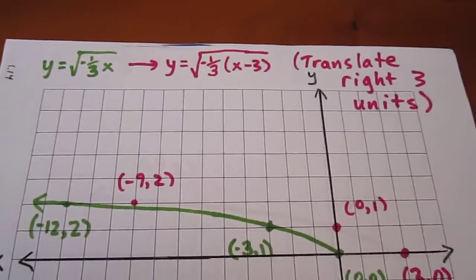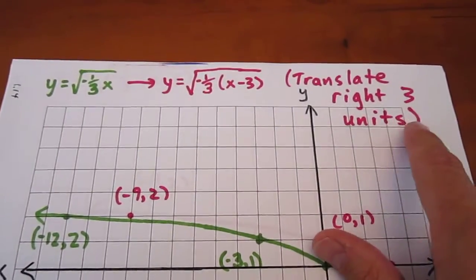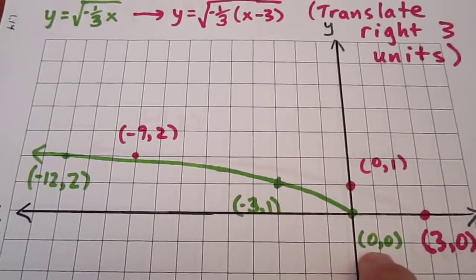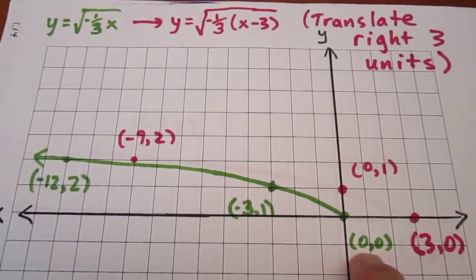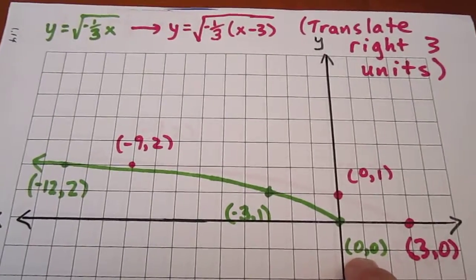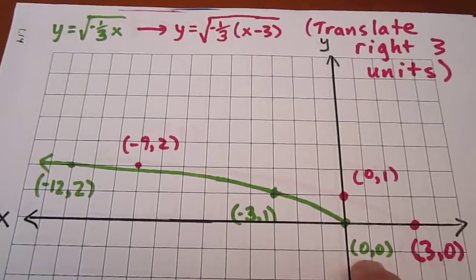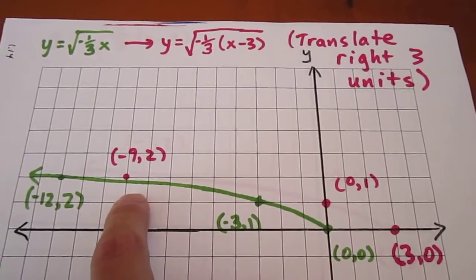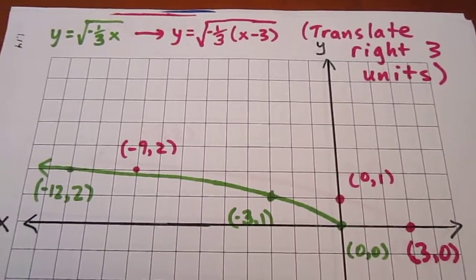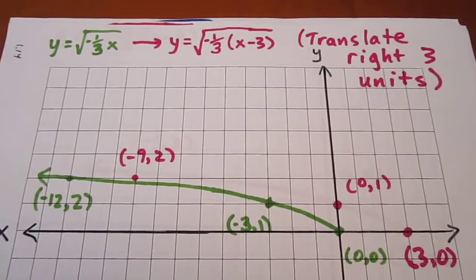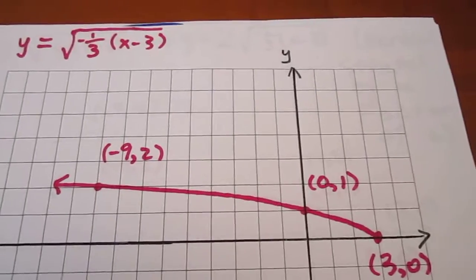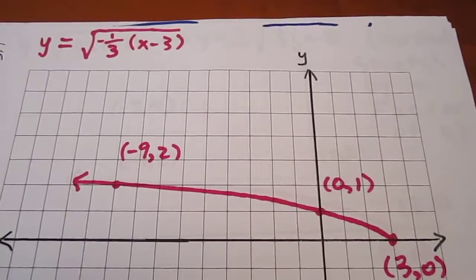Now what we want to do is consider what happens when we translate our curve to the right 3 units. Every one of these points now has to have 3 units added to the x-coordinate. The y-coordinate remains unchanged because this is not a vertical transformation. It's a horizontal transformation. Now what we do, we discard the green curve and consider the pink.